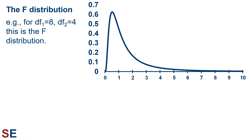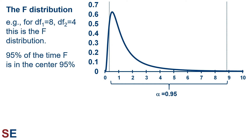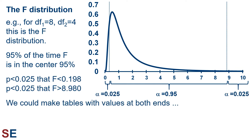Let's look in more detail at the F-distribution for 8 degrees of freedom and 4 degrees of freedom. This figure shows the probability distribution, and we can see that most F-values will be close to 1. 95% of the time, the F-value from two samples from populations with the same variance will be in the middle 95% of this probability distribution. If we wanted to figure out critical F-values — the threshold values far enough away from 1 to be very unlikely — we can choose an alpha value for the area under the curve at each end. If we chose alpha equal to 0.025, giving 2.5% at each end and 95% in the middle, those F-values would be 0.198 and 8.980. We can make tables with these values at both ends, and our task is to see if the F-calculated value is small enough or large enough to be in one of these alpha equals 0.025 regions.